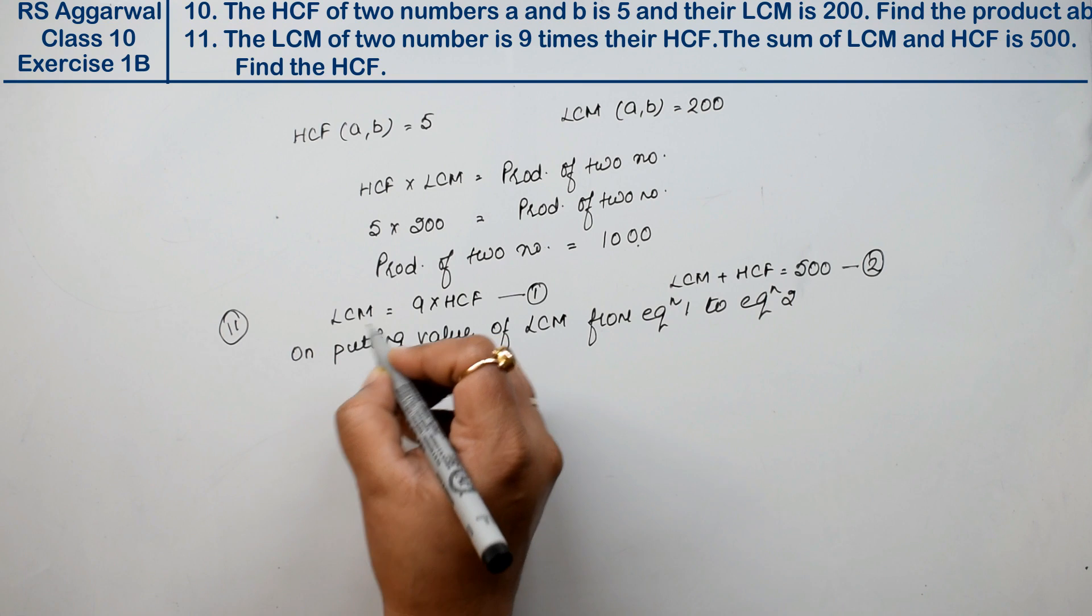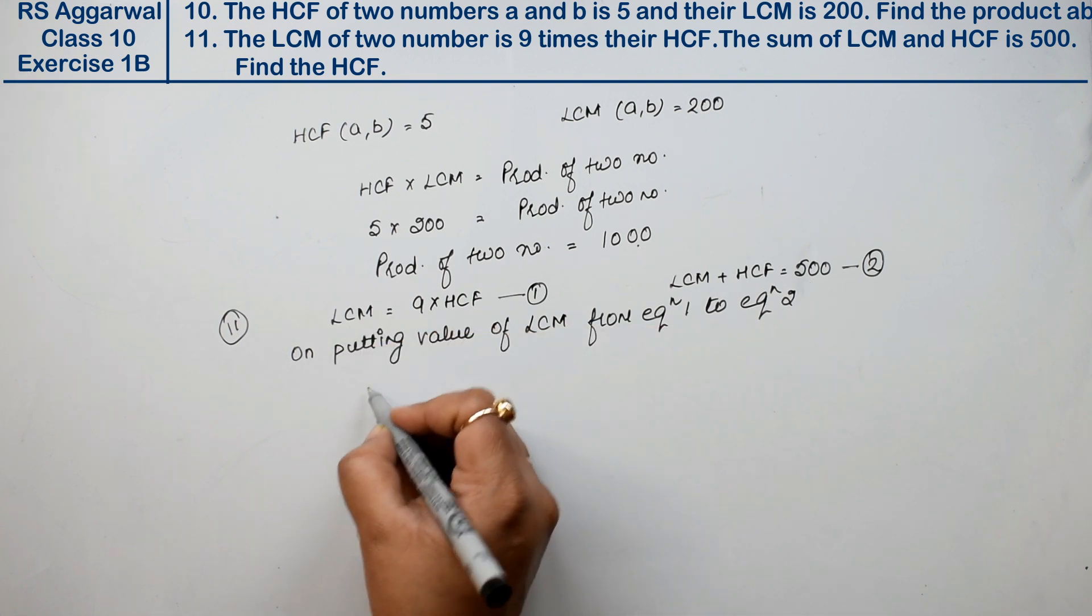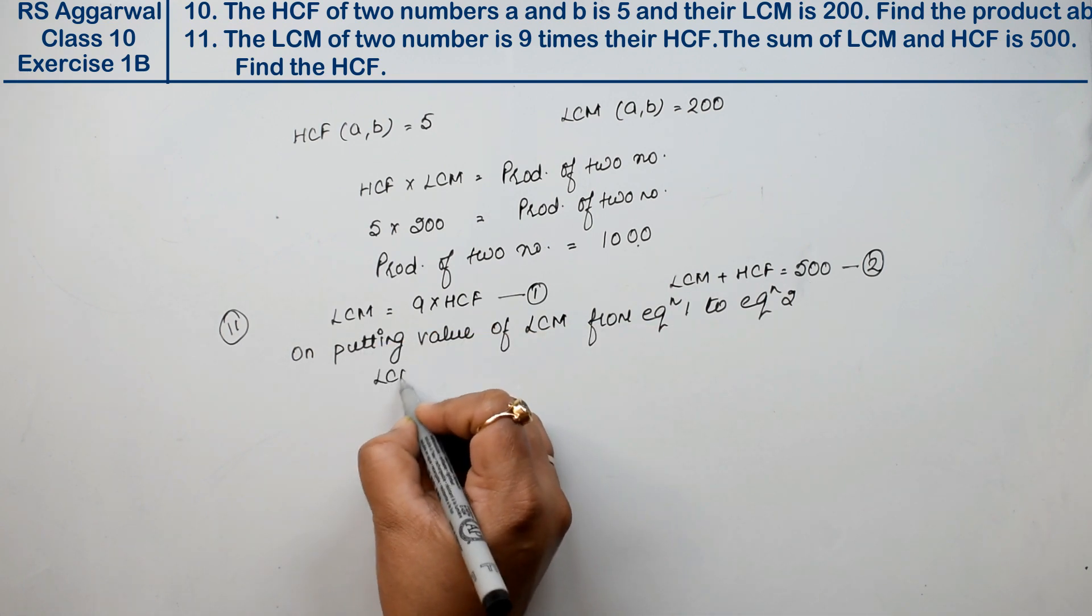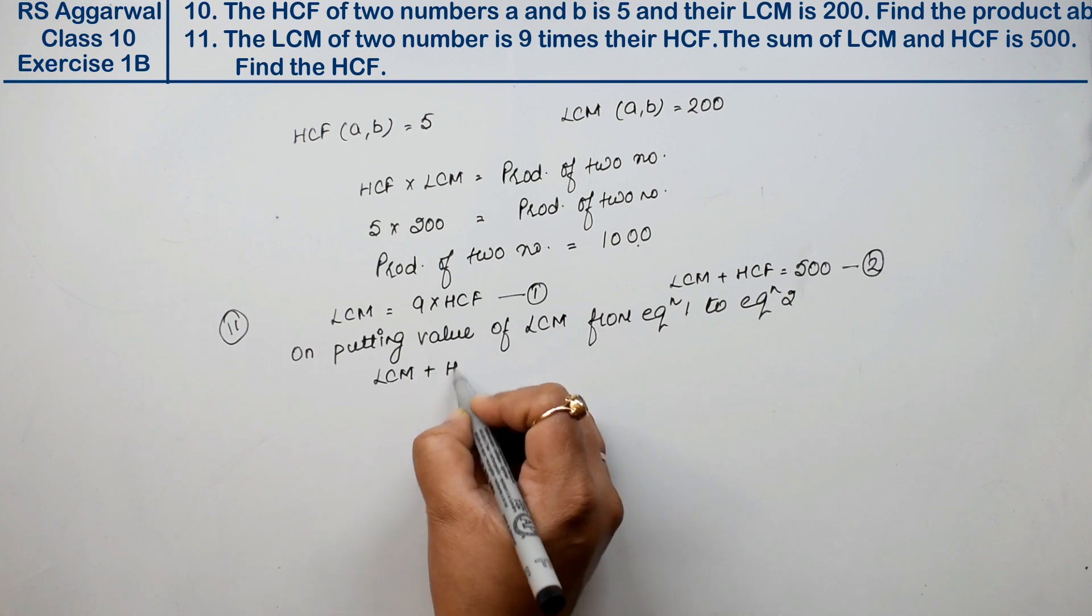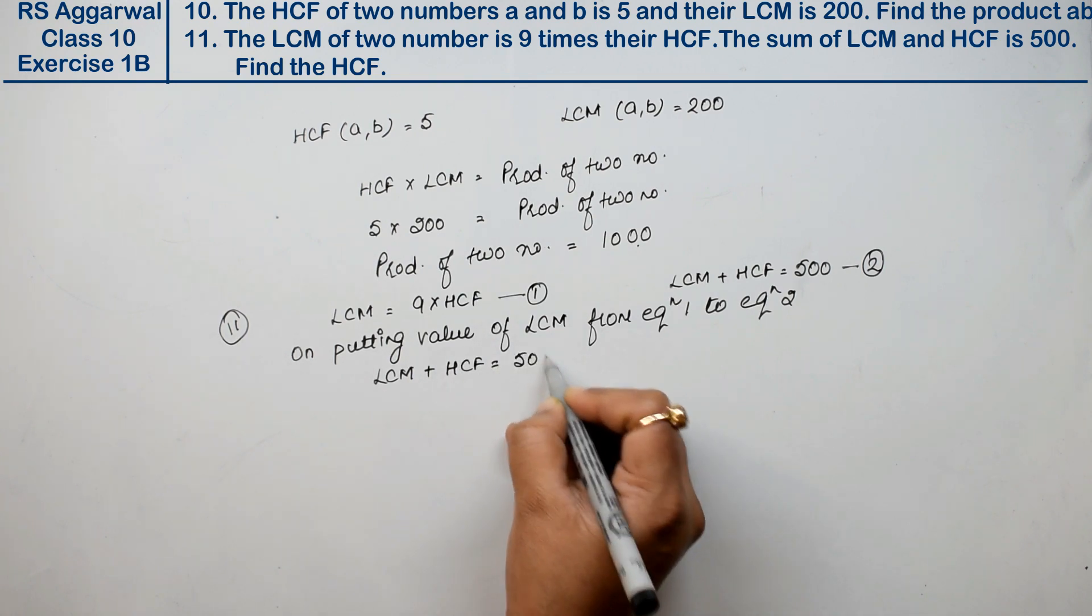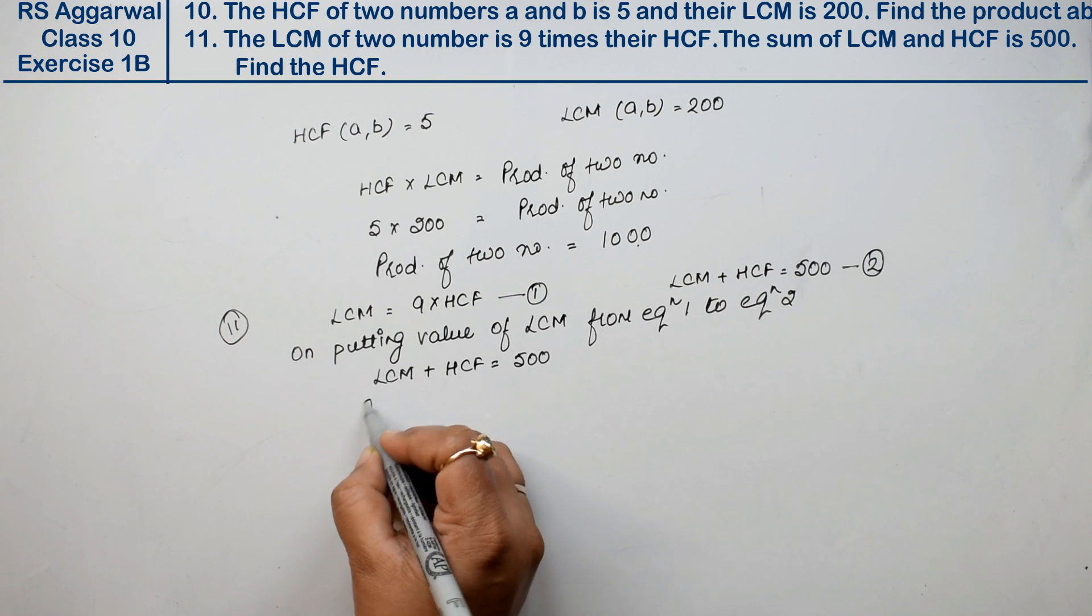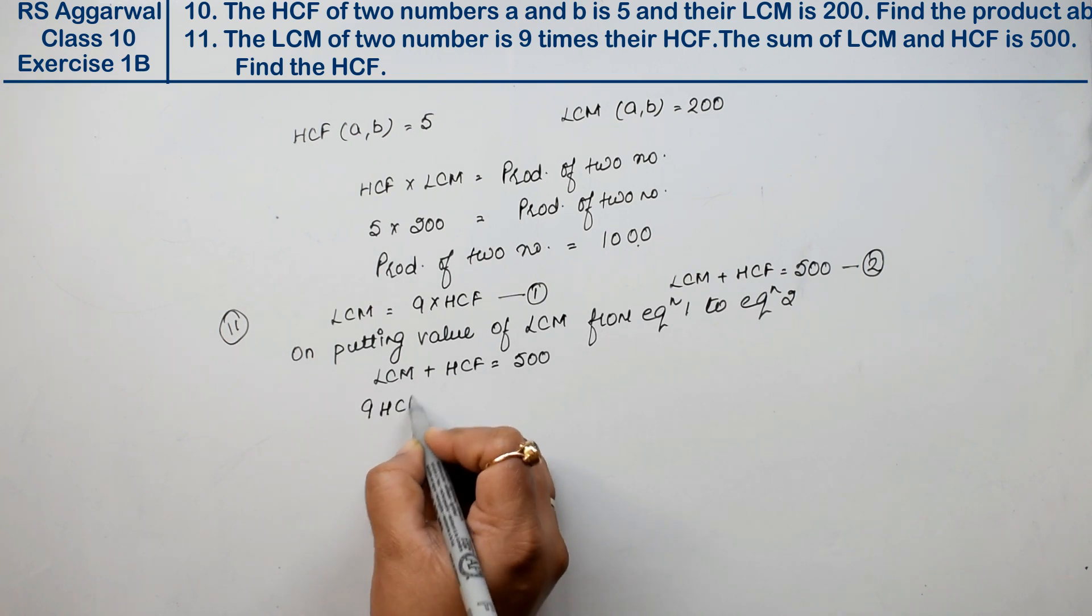This means I put LCM's value here. So what happened? This was our LCM plus HCF equals to 500. So I put LCM's value here as 9HCF. So we had HCF here, 9 into HCF, then 9HCF here.